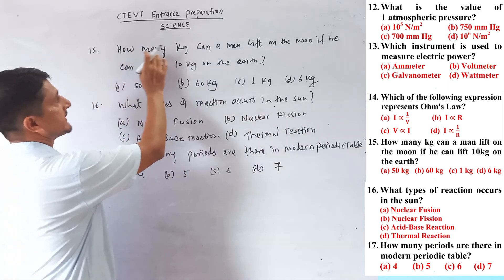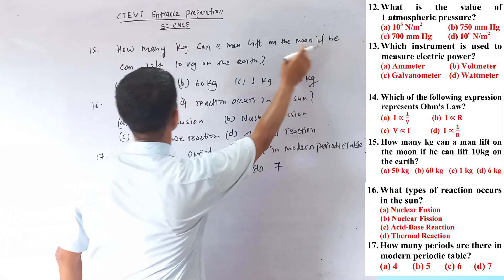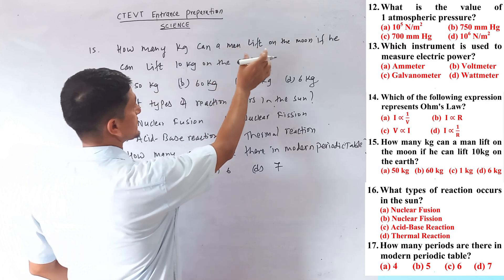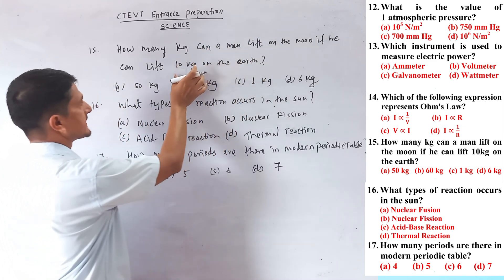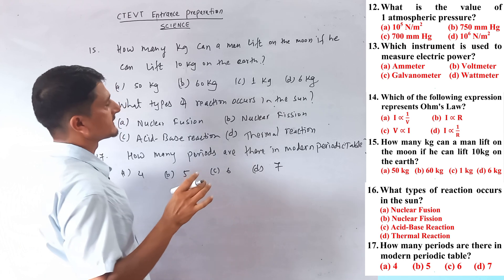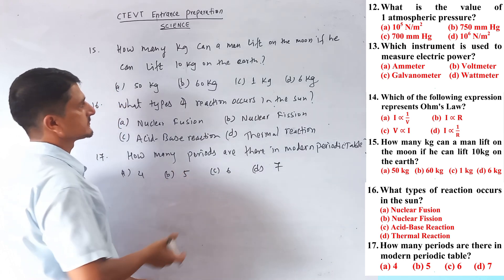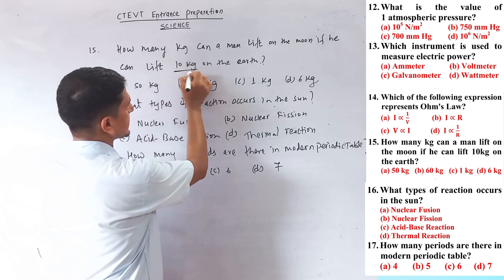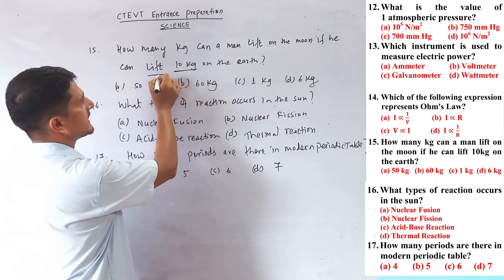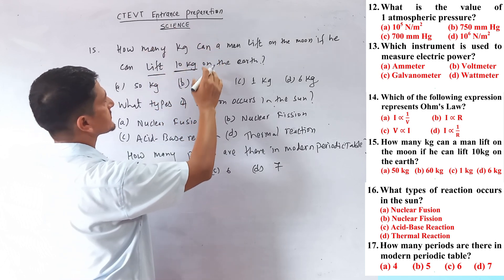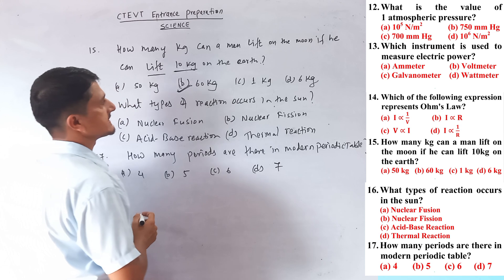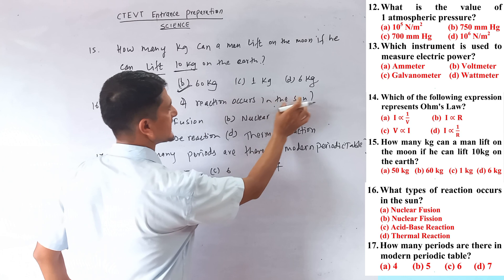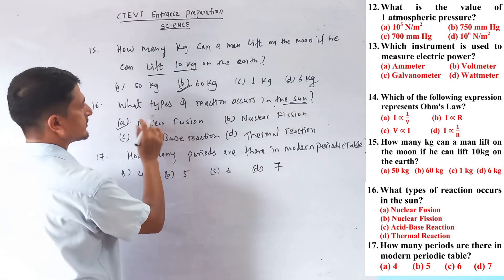Question number fifteen: how many kg can a man lift on the moon if he can lift 10 kg on Earth? The acceleration due to gravity on the moon is six times less than on Earth, so a man who can lift 10 kg on Earth can lift 60 kg on the moon.